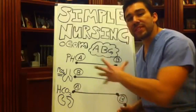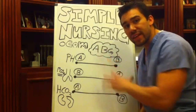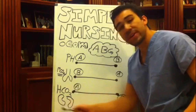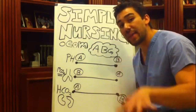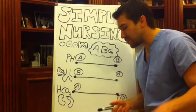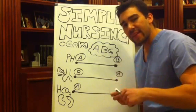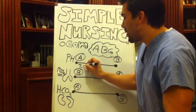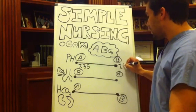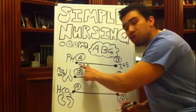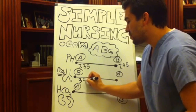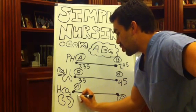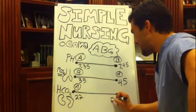Once you have filled out your marching band suit for your ABGs — the little buttons on your marching band suit — you put your pH up here, your lungs over here, your kidneys down here. Now you're ready to type in the numbers. Your pH normal range is 7.35 to 7.45. When you drop the seven, you have 35 and 45. For your kidneys, your HCO3, you use 22 to 26.